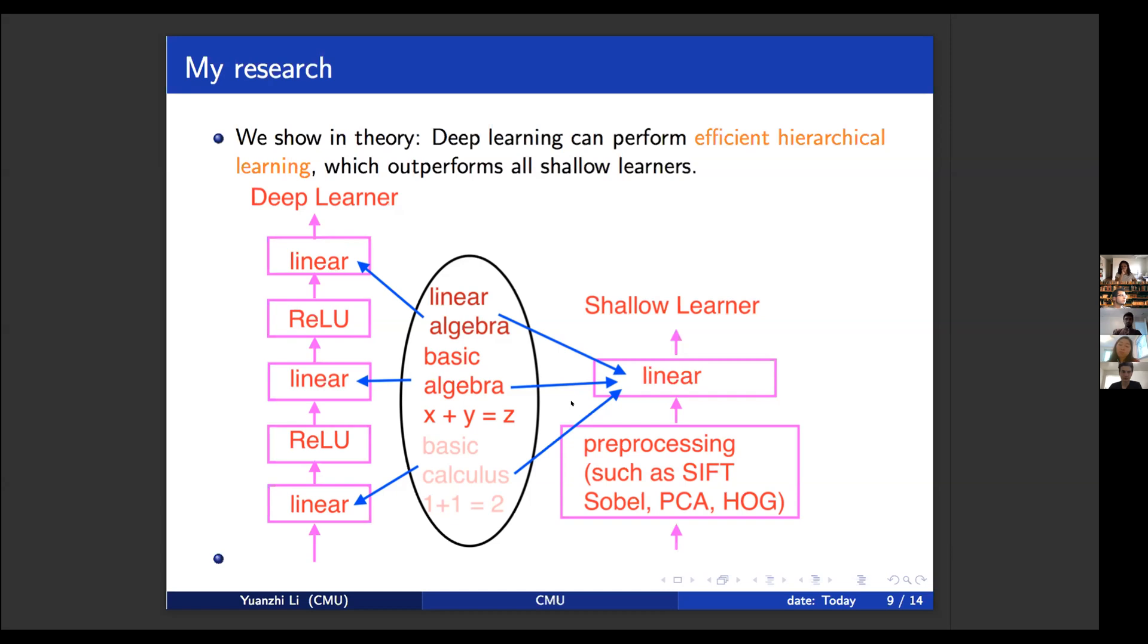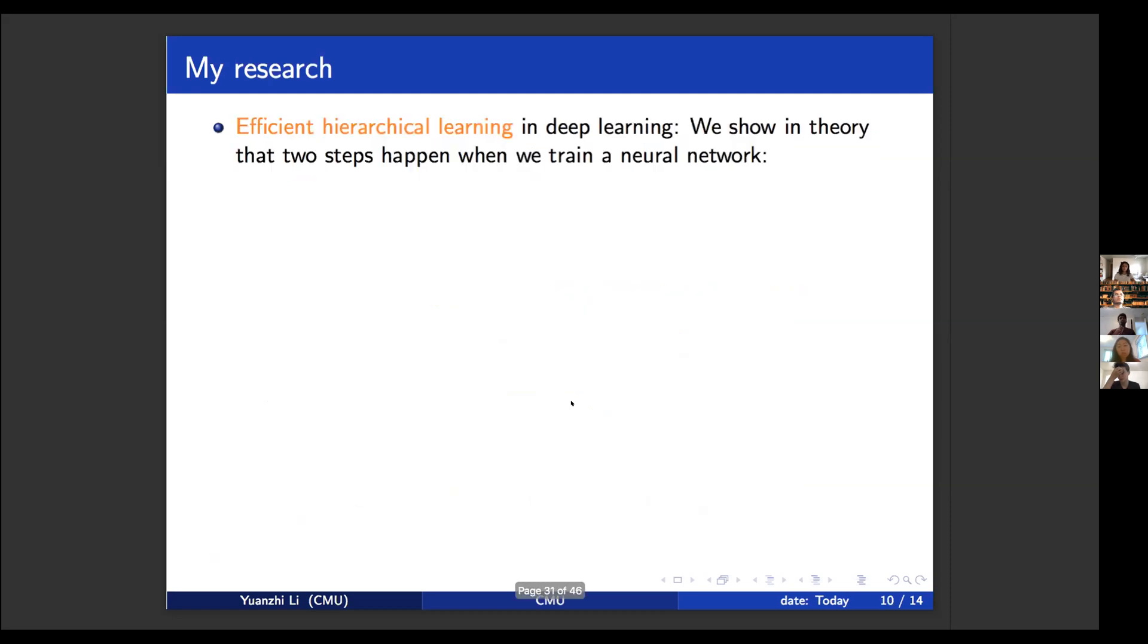And of course, after you learn basic calculus, learning basic algebra is not that hard. After you learn basic algebra, learning linear algebra is not that hard. So deep learning can decompose the hierarchy of the data set into different layers of the neural net to reduce the learning difficulty. On the other hand, the shallow learning needs to learn everything from this linear layer. So in this linear layer, it has to learn everything from scratch. And this will boost the complexity by a lot. In the past research, we have shown formal theory demonstrating this power and also giving lower bounds showing that shallow learners really cannot do hierarchical learning. And on the other hand, we also show how deep learning performs efficient hierarchical learning in theory.